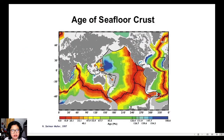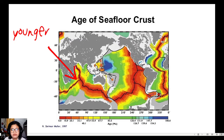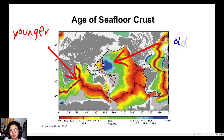Finally, here is a graph showing the age of seafloor crusts. Most mid-oceanic ridges are found in the Pacific Ocean and in the middle of the large oceans. On the graph, red represents younger plates and blue represents older ones. We can see that parts of the lithosphere closer to the mid-oceanic ridges are younger, while those farther away from the ridges are older.